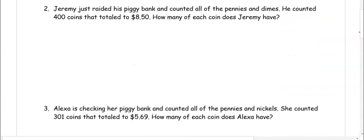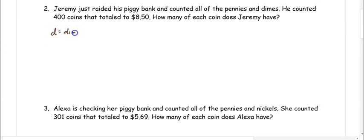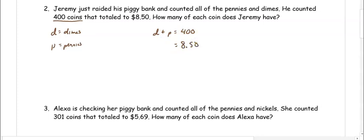In number two, Jeremy just raided his piggy bank and counted all the pennies and dimes. He counted 400 coins that totaled $8.50. How many of each coin does Jeremy have? The two coins are D for dimes and P for pennies. We know he collected 400 coins, so D plus P equals 400, and he has $8.50.